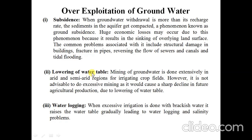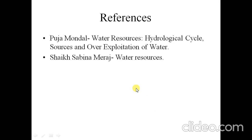The next point is the lowering of the water table. Mining of groundwater is done extensively in arid and semi-arid regions for irrigating cropfields. However, it is not advisable to do excessive mining, as it would cause a sharp decline in future agricultural production due to the lowering of the water table. Water logging: when excessive irrigation is done with brackish water, it raises the water table gradually, leading to water logging and salinity problems. So, that was about the over-exploitation of surface and groundwater, water use, and water resources.